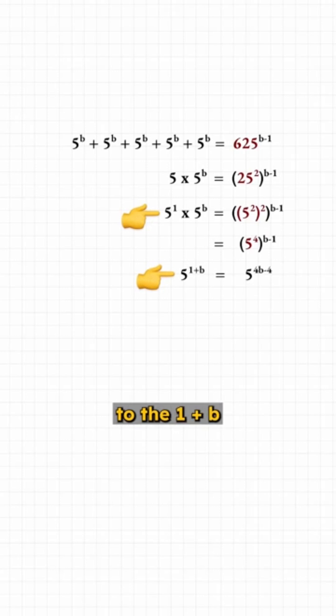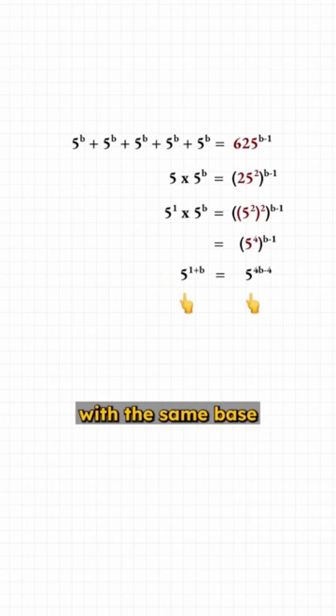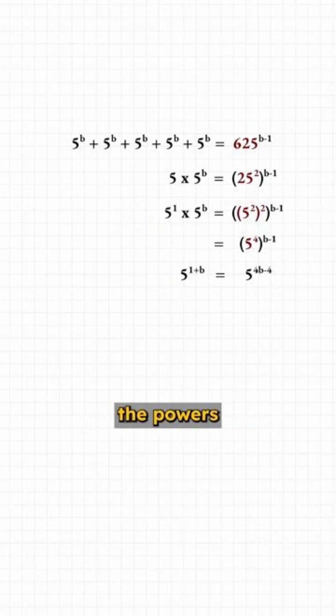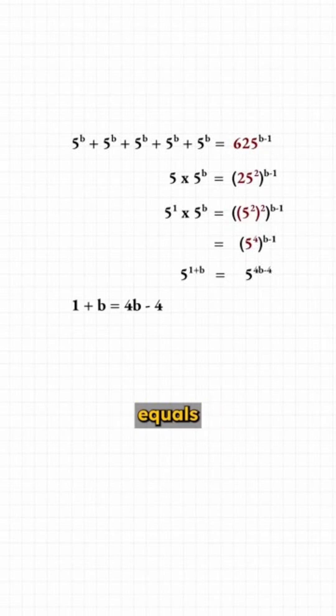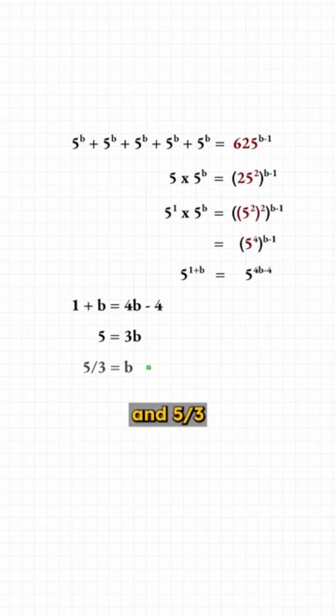When multiplying exponents with the same base, you add the powers, so this is five to the one plus b power. Now that you have an equation with the same base, you just compare the powers: one plus b equals four b minus four, so five equals three b, and five thirds is your answer.